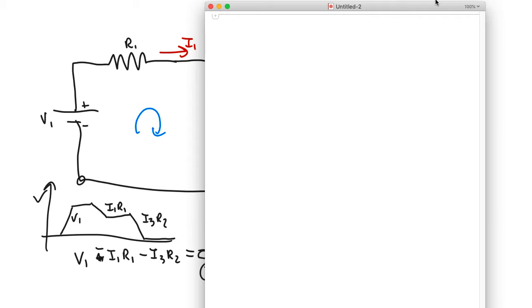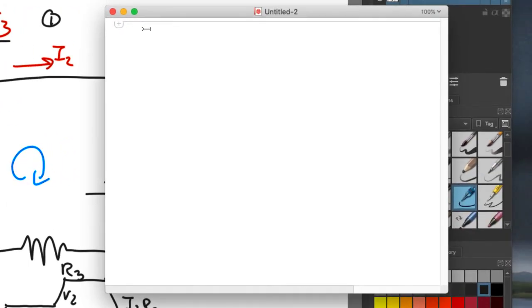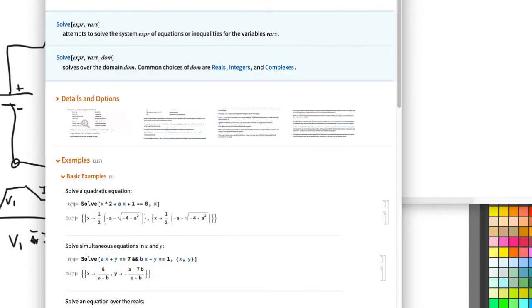So I open up a Mathematica notebook and I'm going to use the solve command. As all Mathematica commands it starts with a capital Solve and then opens a square bracket. Now I don't remember the syntax for this but if I click on the i button there it brings up a help page and down here it has how you solve simultaneous equations.